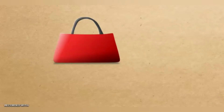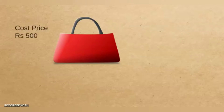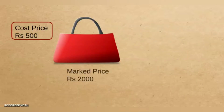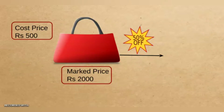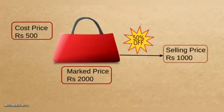There are a few terms to understand here. Before selling a handbag, the shopkeeper must buy it first. The price at which the shopkeeper bought it is called the cost price — let it be rupees 500. Before giving a discount, he marked the price of the handbag as rupees 2000, keeping in mind to give rupees 1000 as discount. He allows a discount of 50% on it, and after giving that discount, he sells it at rupees 1000.